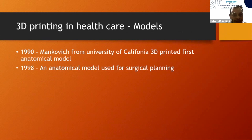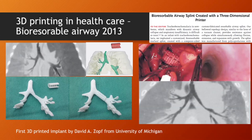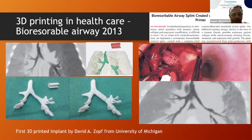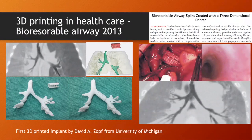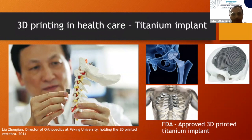Coming to healthcare, let us see the journey of 3D printing. In 1990, Mankovic 3D printed anatomical models for teaching. But for nearly two decades, it wasn't used much. It was Professor David A. Zoff of the University of Michigan who first 3D printed a bioresorbable airway to treat tracheobronchomalacia — this airway holds the trachea open in the patient and was a very good success. Followed by Liu Zonglian, who 3D printed a titanium spine implant for a child. Following his footsteps, we are now 3D printing hip replacements, sternums, and crushed skulls with titanium implants.